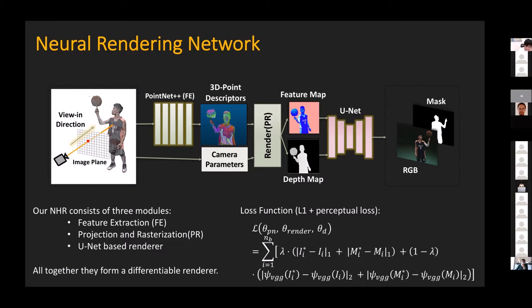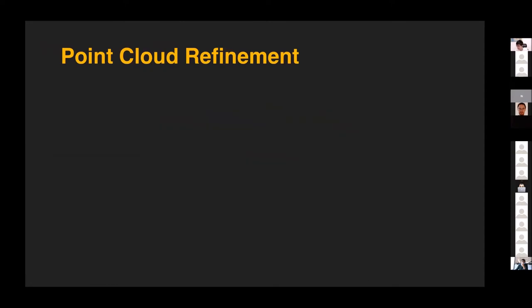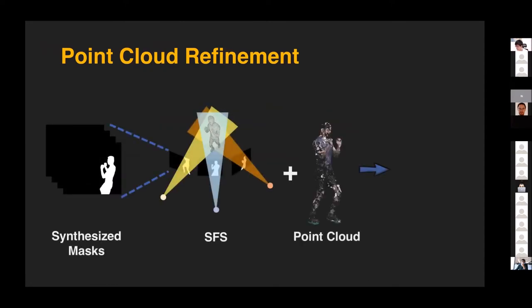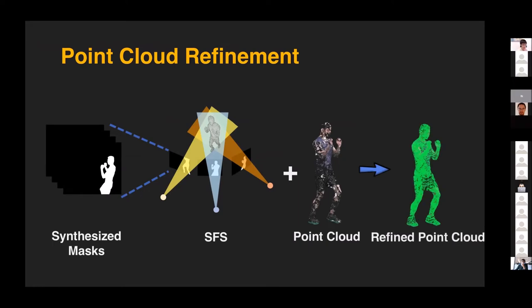The idea is simple: you start from poor reconstruction, then slowly move to better masks and images. It turns out to work very well. If we can generate very dense masks at high quality, we can further conduct shape from silhouette or volume carving to patch errors, holes, or noise in the initial reconstruction.